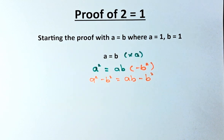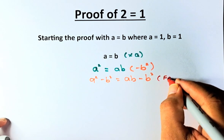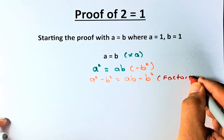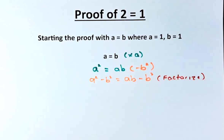Now, the next step, what we're going to do, we are going to factorize. A squared minus B squared.